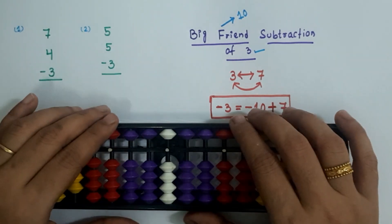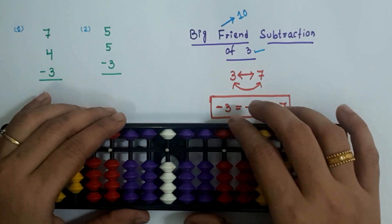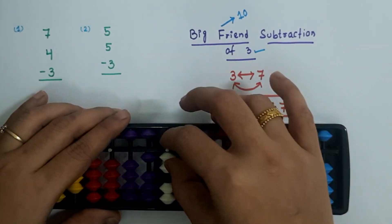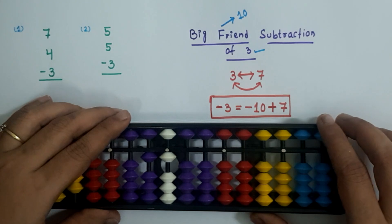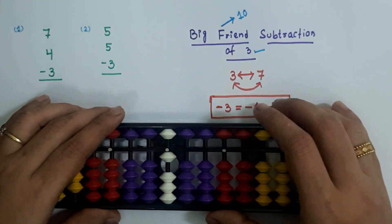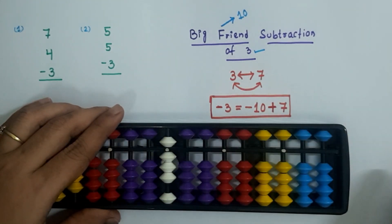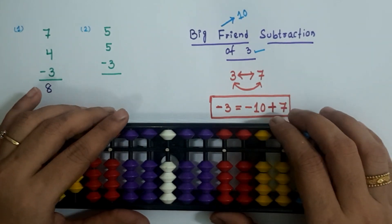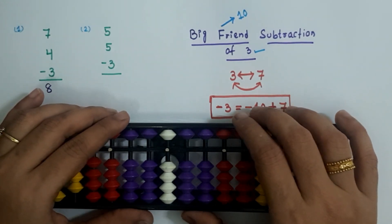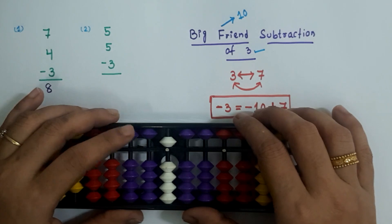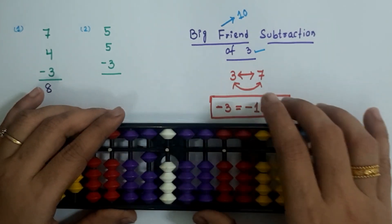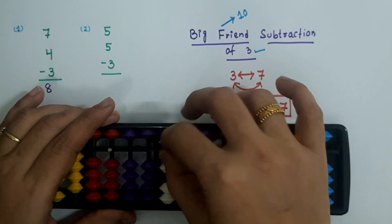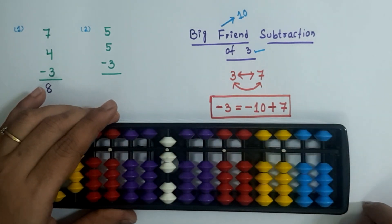The first sum is 7 plus 4 minus 3. 7 plus 4 is plus 10 minus 6. Minus 3 is minus 10 plus 7. So the answer here is 8. Now let us solve the second sum: 5 plus 5 minus 3. 5 plus 5 is plus 10 minus 5. Minus 3 is minus 10 plus 7. So the answer here is 7.